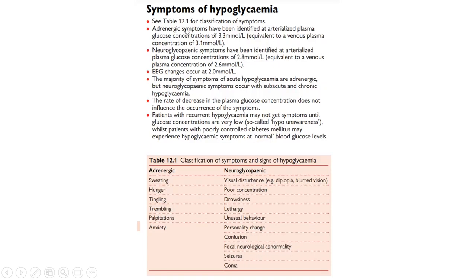We are often asked about the blood sugar cutoffs at which symptoms start. In the Oxford Handbook, adrenergic symptoms have been identified at arterialized plasma glucose concentrations of 3.3 mmol/L, equivalent to a venous plasma concentration of 3.1 mmol/L. Whereas neuroglycopenic symptoms have been identified at an arterialized plasma glucose concentration of 2.8 mmol/L, equivalent to a venous plasma concentration of 2.6 mmol/L. EEG changes occur at 2 mmol/L. These numbers are important and frequently asked in exams.